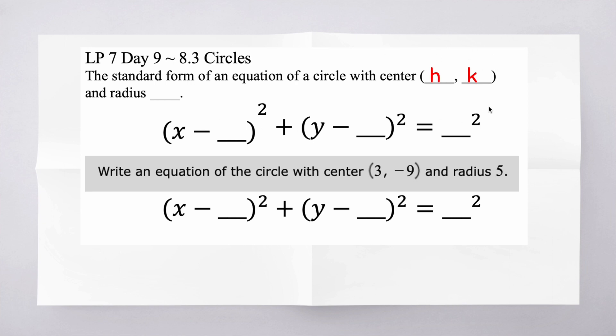All of these conic sections - that's what we call them: circles, ellipses, hyperbolas, even parabolas - they all have a center or a vertex of (h,k). Parabolas have a vertex, the rest of them usually have centers, and the radius is going to be referred to as r.